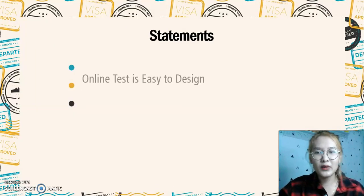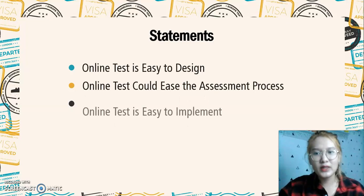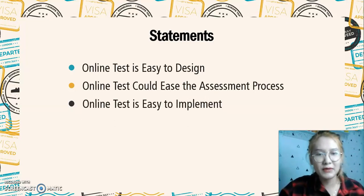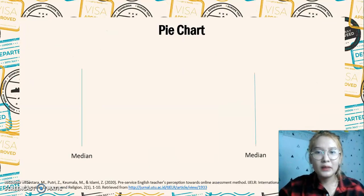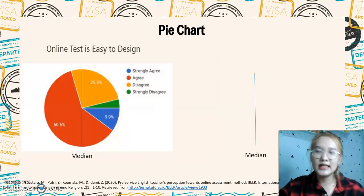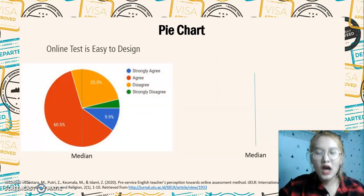We have three statements. The first one is: online test is easy to design. The second one is: online test is the assessment process. The third one is: online test is easy to implement. The pie chart of this data — as you can see — shows the first statement: online test is easy to design.